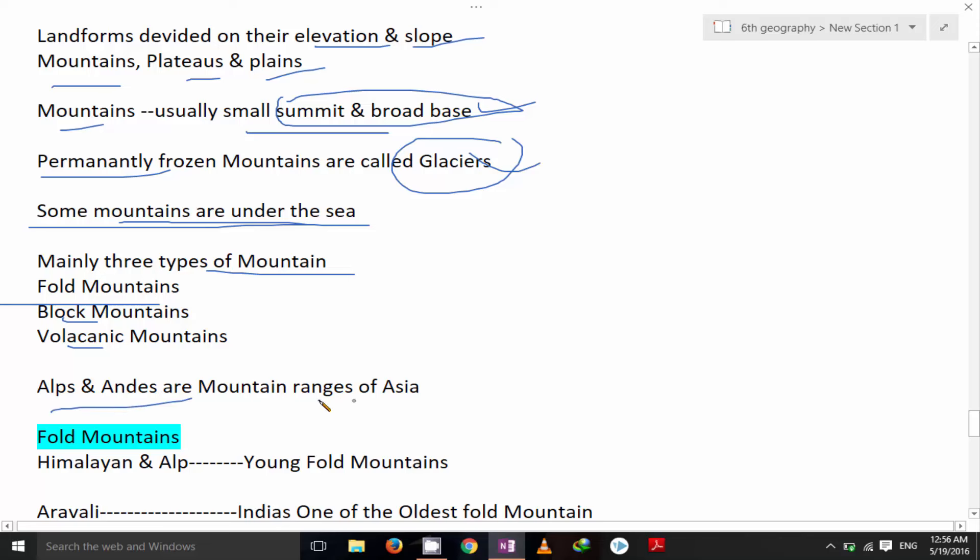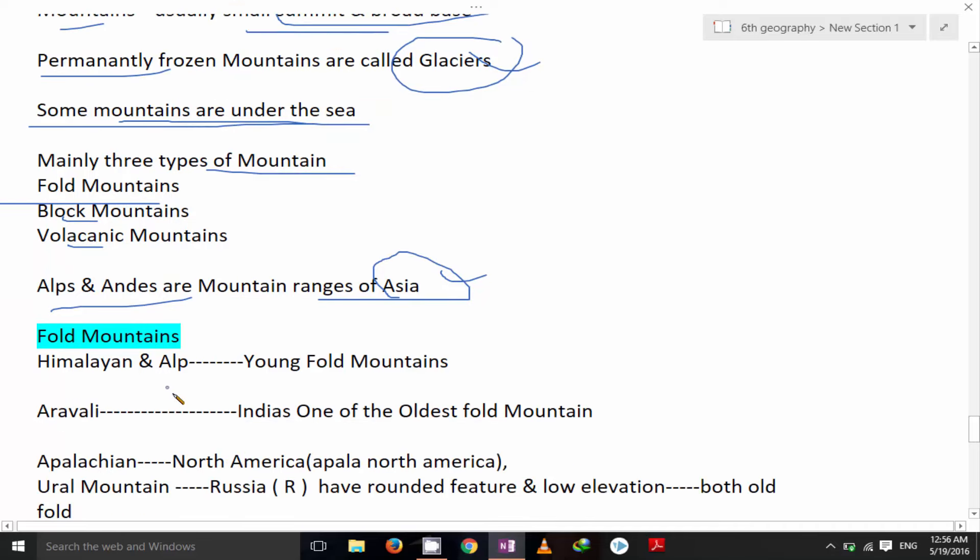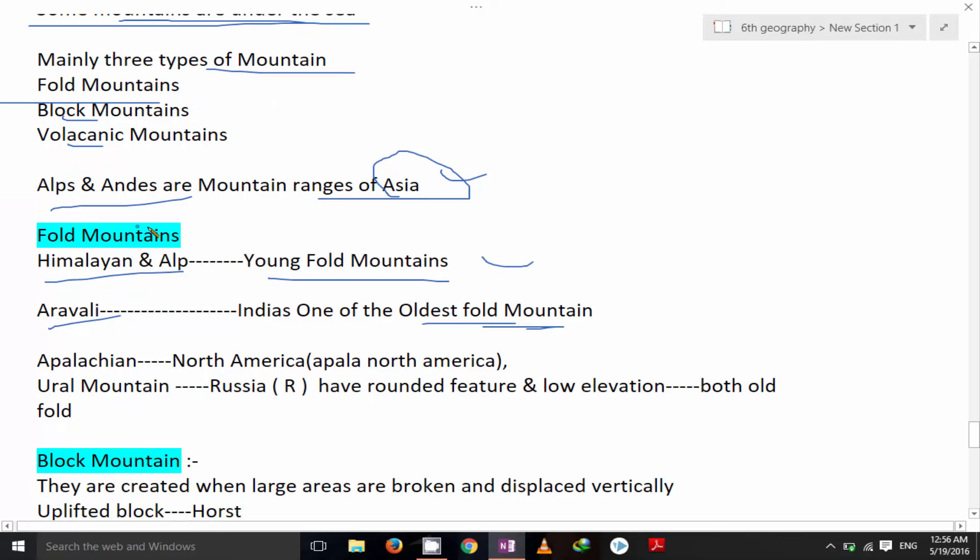Alps and Andes mountain ranges of Asia. Fold mountains: Himalaya and Alps, these are young fold mountains. Aravali, it's oldest, one of the oldest fold mountain. Appalachian that is present in North America. Ural mountain is in Russia, have rounded feature and low elevation. It is old as well as fold.